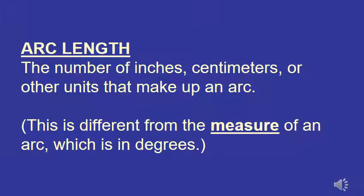Going right along with circumference is the idea of arc length. Arc length is the number of inches or centimeters or feet or meters or whatever length you're looking at, number of units that make up an arc. Now that's actually different from the measure of an arc that we talked about earlier, which is always done in degrees. Arc length is in units of length, like inches, and measure is in degrees. So you do want to be careful of what they're asking on questions like that.